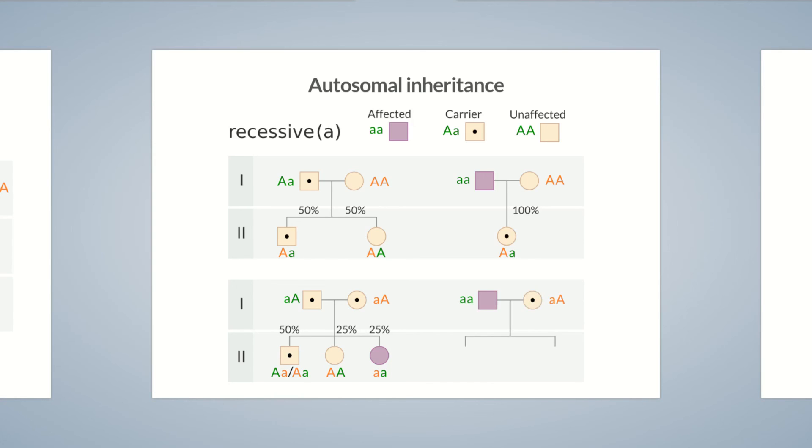If one parent is a carrier and the other parent is affected, then all of the children in the second generation are at least carriers. The probability of a child being affected is 50%. All of the children inherit a recessive allele, namely little-a from the affected parent, and have a 50% chance of inheriting an additional recessive allele, little-a, from the carrier parent.